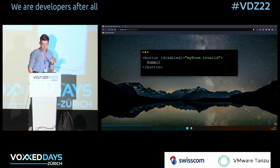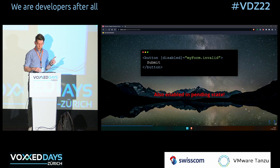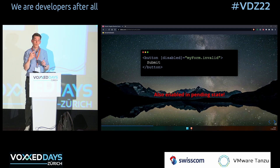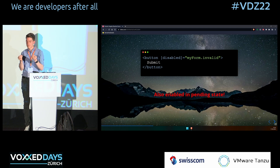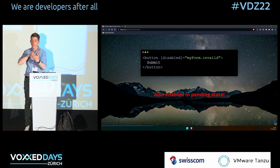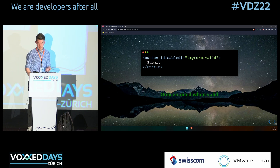The pending state is when we have asynchronous validation — for example, checking if an email address is already taken. During the time when you're sending the HTTP request and before it comes back, the form is pending. You don't want the button to be enabled when it's pending because you don't have any response yet. So please always work with not valid — then you cover the pending state as well. This is a very important trick.